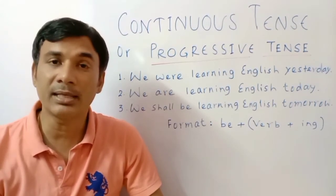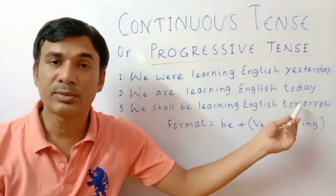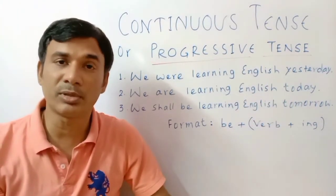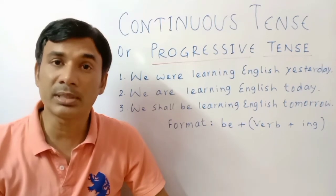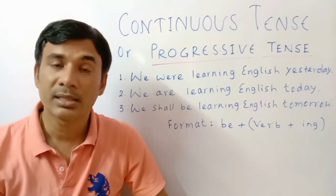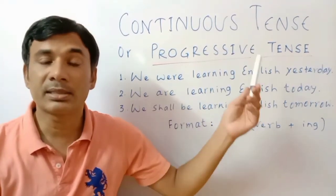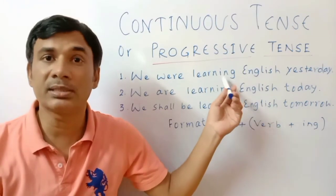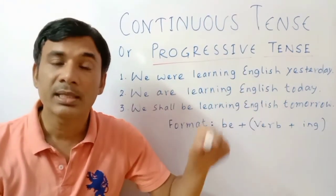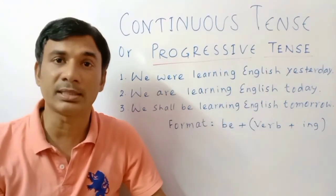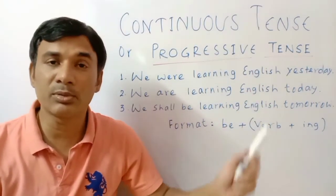So what are the times? Look, it is written here: yesterday, today, and tomorrow — this is the tense. And what will be the continuous tense, and what is its another name? Its another name is progressive tense, because it is continuing, it is progressing, therefore it is continuous tense.